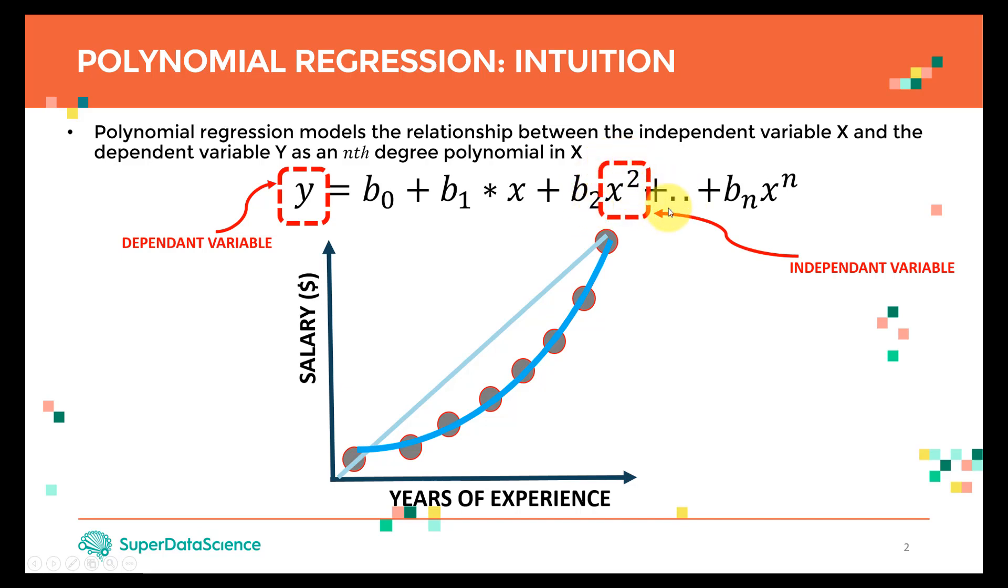But the more parameters you add, the more complex the model will become, and the more coefficients we're going to be having. That means more memory usage, more computational complexity, and so on. We can stop when we reach Bn times X to the power of n, where n could be four, five, whatever you want. That's why we call it the nth degree polynomial in X. That's pretty much polynomial regression in a nutshell—it's very simple and straightforward.